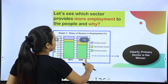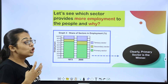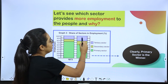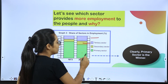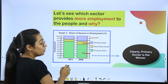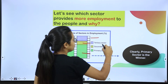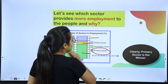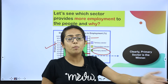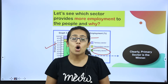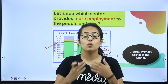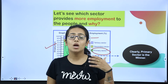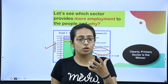Which sector provides more employment? Looking at the data from 1973 to 2000, the primary sector clearly dominates employment. Primary sector is the winner. The reason is that we are not developing in technology and industries, and secondary and tertiary sectors are not developing properly or giving proper outcomes to the people.